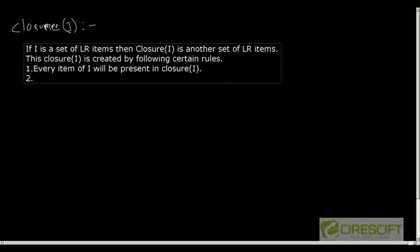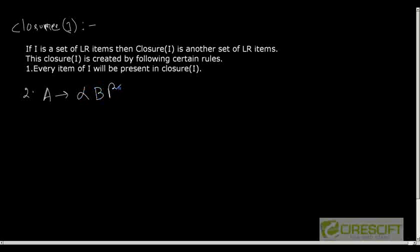What are those rules? First rule is every item of I will be present in closure of I. Second is suppose I have an item in the form A → α•Bβ, and suppose I have a production in the grammar that is B → γ, then this implies B → •γ will also belong to closure of I.